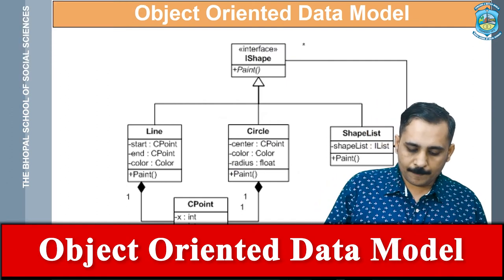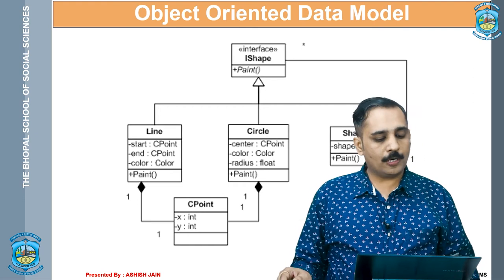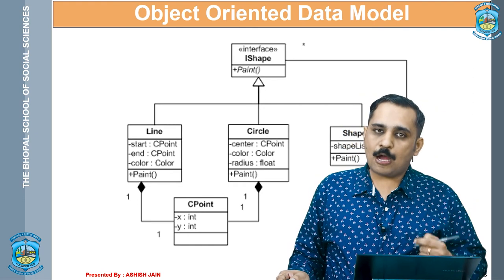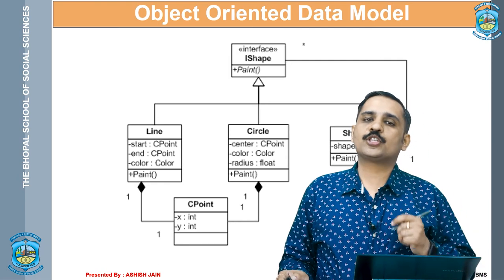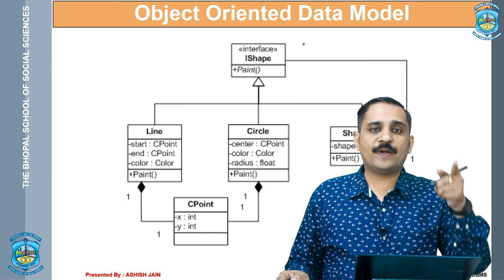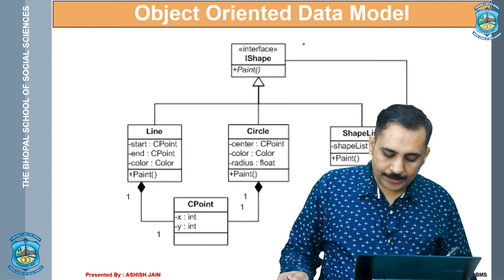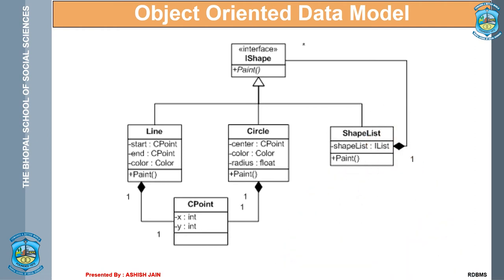Let us see a basic description with a diagram. We have a class called 'IShape' with a method called 'paint'. Within this, we have different objects of the same class: a line object, a circle, and a shape list. The line object has properties like starting point, ending point, color of the line, and also uses the paint function defined in the parent class — this is the concept of inheritance. The circle contains center point, color, radius, and the paint method. A 'CPoint' is used by both line and circle as a center point, having coordinates x and y. This type of representation is called object-oriented representation, and using it in data modeling is the object-oriented data model.